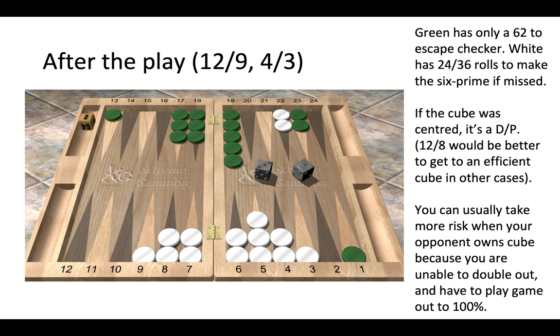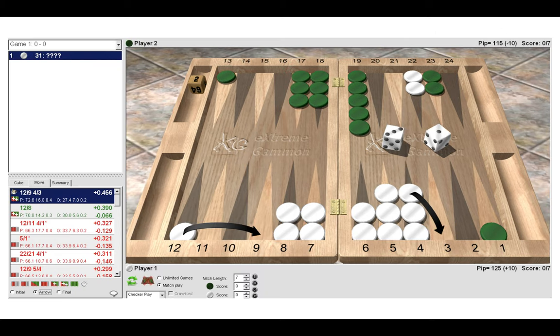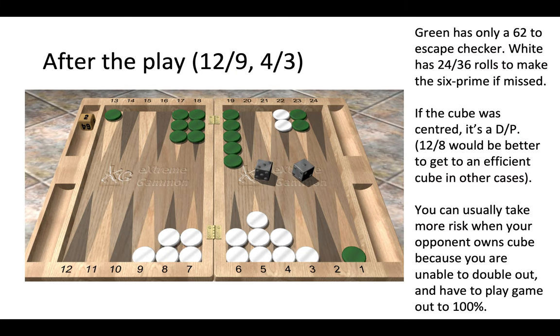The reason why it is correct to play from 12 to 8 if the cube was centered is because we are moving to a position where we have an efficient cube—we are edging towards a win, edging towards a double pass. Let me just go back and show that to you. You can see the move with the cube on the opponent's side, but it would be correct here if the cube was centered to play 12 to 8, because then we are just going to double green on the next roll if he doesn't roll a 2-6, and then he's going to pass.